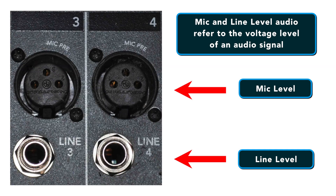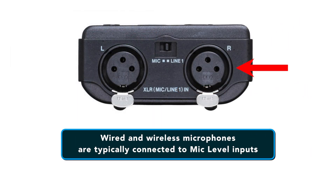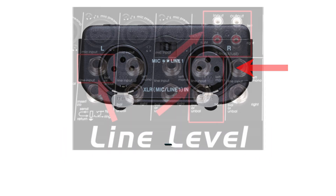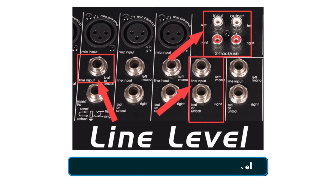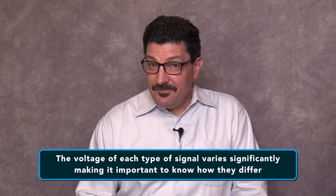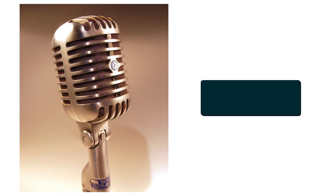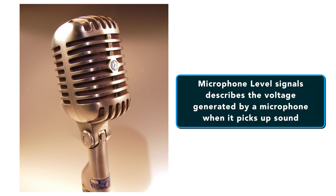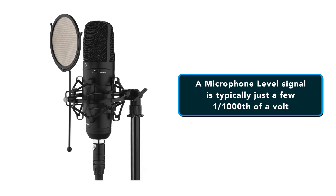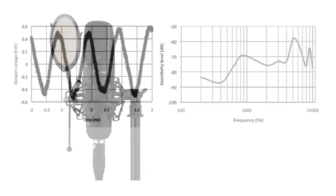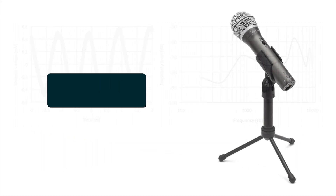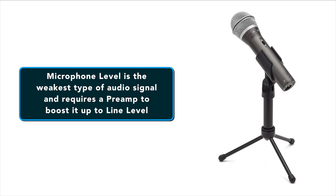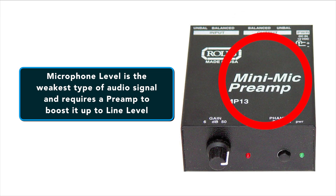Number one is mic level signal. Both mic and line level audio refer to the voltage level of an audio signal. Wired and wireless microphones are typically connected to mic level inputs, while most other audio devices such as mixers and the outputs of mic preamps use line level signals. The voltage of each type varies significantly. Microphone level signals describe the voltage generated by a microphone when it picks up sound — typically just a few thousandths of a volt. Of the four main types of audio signals, microphone level is the weakest and requires a preamp to bring it up to line level.